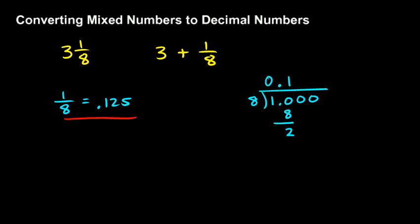Then we bring down this 0 and we get 20. And we say, how many times does 8 go into 20? And it goes in 2 times, so we put a 2. Then we multiply, 2 times 8 is 16. We subtract, 20 minus 16 is 4. Then we bring down this 0, so we have 40.